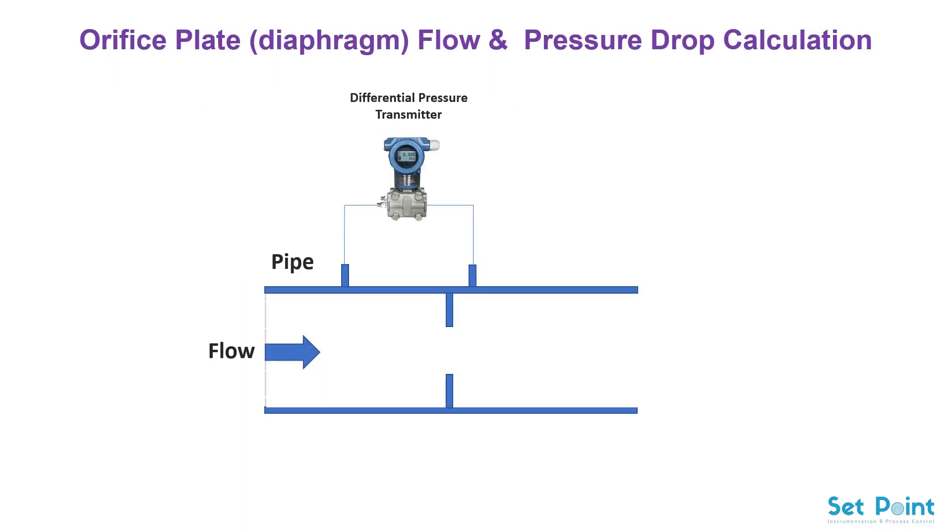The primary element, often called a square-edged orifice plate, consists of a flat piece of metal with sized hole bored in it, creating a dp across it. The square root of the dp is proportional to flow.